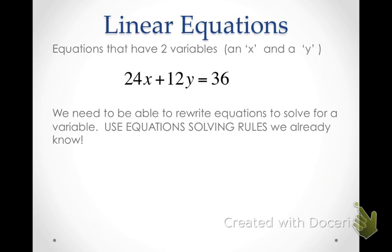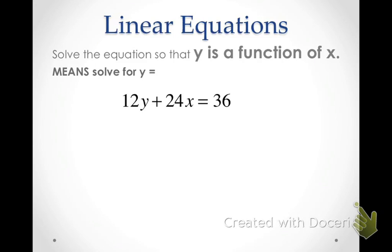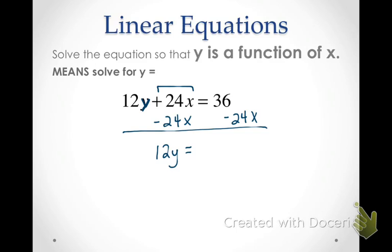Next we have an equation in standard form and we're going to solve it for y, getting y alone. We need to rewrite these equations to solve for a variable using equation rules we already know. Always know what you're solving for — sometimes you'll forget and start solving for the wrong variable. First I'm going to get rid of whatever is added or subtracted, so I'm going to move the term 24x over to the other side. It's attached by addition, so I'll subtract 24x from both sides. On the left I'm left with 12y, and on the right I put the x term first — and that 36 was positive, so I put plus 36.